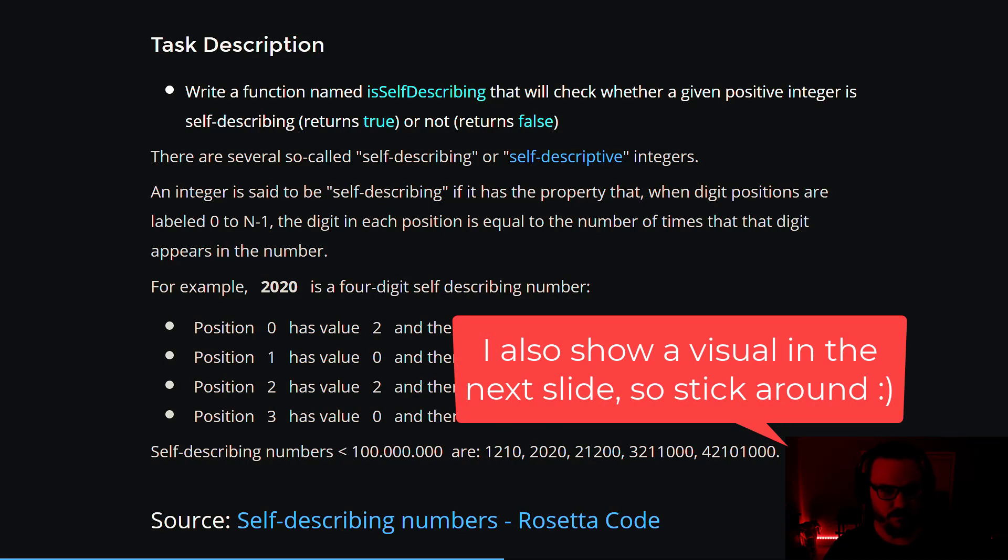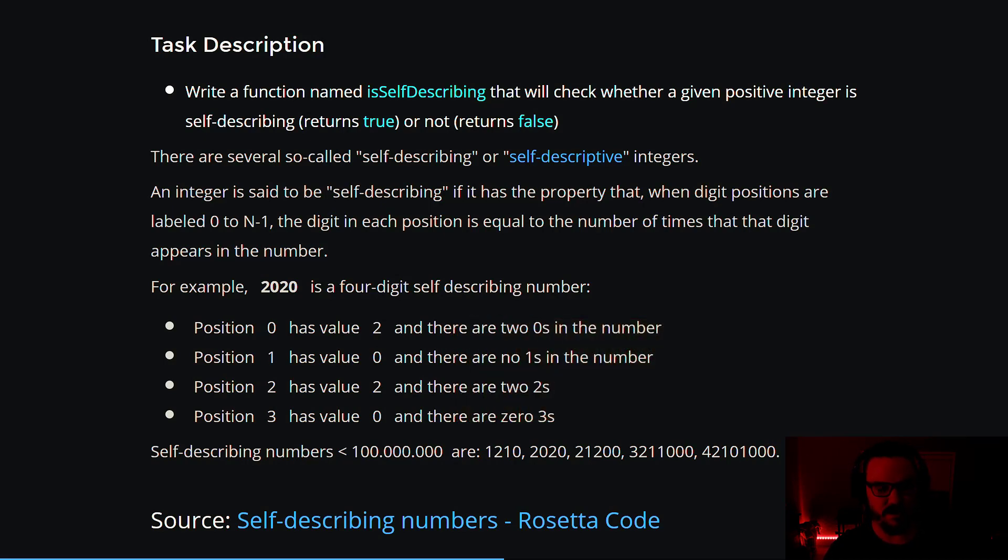For example, the number 2020 is a four-digit self-describing number. So the first position, zero, think of it like an array with a zero-based indices. So that first position, zero, has the value two. And there are two zeros in the number.